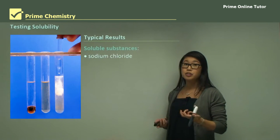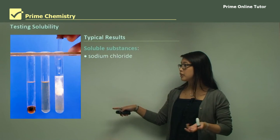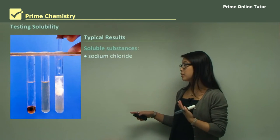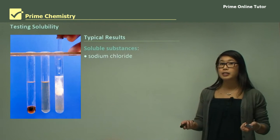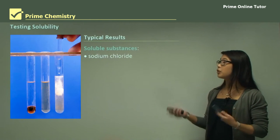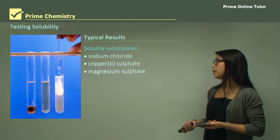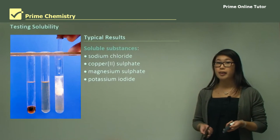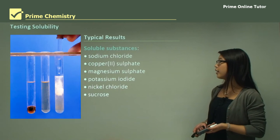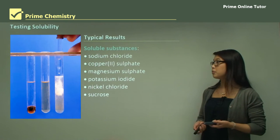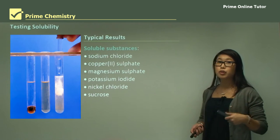The picture shows that some things are going to dissolve and some things aren't. What we expect to see is that sodium chloride, copper sulfate, magnesium sulfate, potassium iodide, nickel chloride, and sucrose are all going to be soluble substances, so they will dissolve fully in the water.